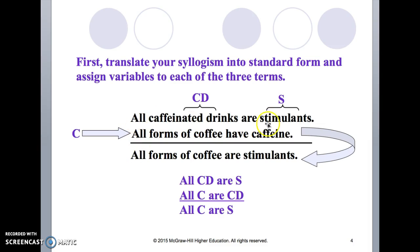Now here in the categorical form premise, in the conclusion the subject coffee is in this minor premise here, all forms of coffee have caffeine.